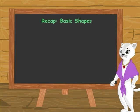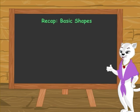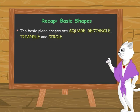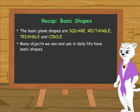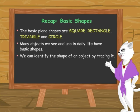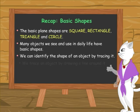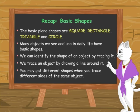Thanks for teaching us about tracings, Miss Lucy. Now Sandy and I will go and trace some more objects. Bye-bye! I am sure you want to try your hand at tracing different objects now. But before you start, let us look at the important points about basic shapes. The basic plane shapes are square, rectangle, triangle and circle. Many objects we see and use in daily life have basic shapes. We can identify the shape of an object by tracing it. We trace an object by drawing a line around it. You may get different shapes when you trace different sides of the same object.